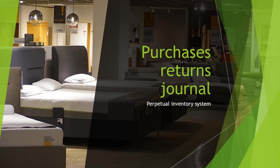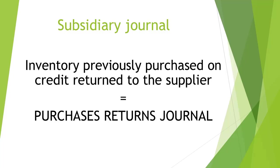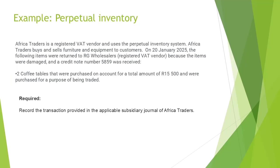Good day. In this short video, we will discuss the recording of a transaction where a business using the perpetual inventory system returns inventory previously purchased on credit. The subsidiary journal where all returns of inventory previously purchased on credit is recorded is the purchases returns journal. Let's have a look at an example.